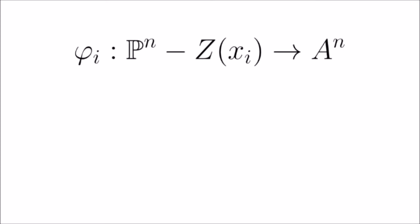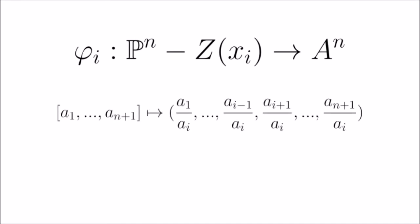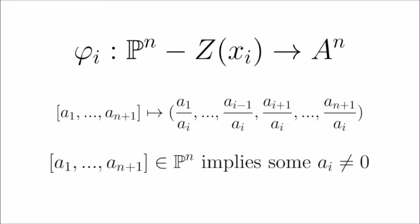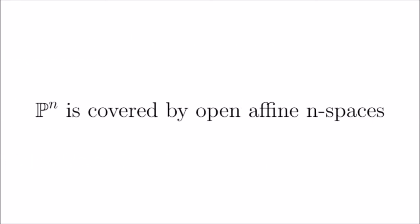We can generalize this process to define an arbitrary φᵢ from the open subset of projective n-space minus the zero set of the homogeneous polynomial xᵢ, by simply doing our previous process but replacing a_{n+1} with aᵢ. Each of these will be homeomorphisms by similar logic. And since a point is only in projective n-space if one of the coordinates is non-zero, we conclude that projective n-space is covered by open affine n-spaces.